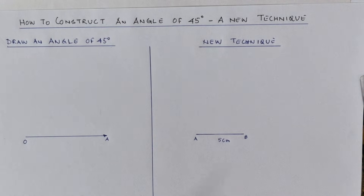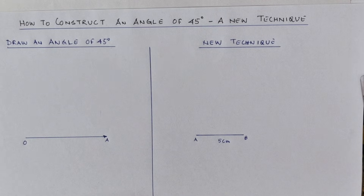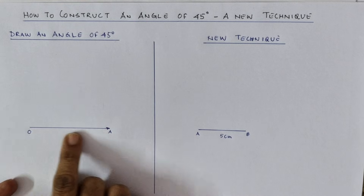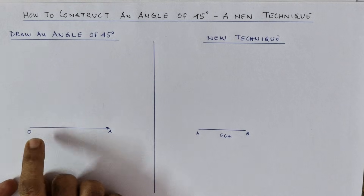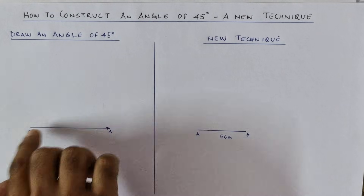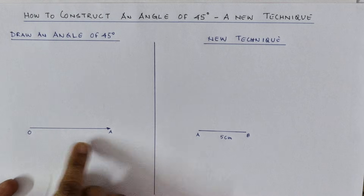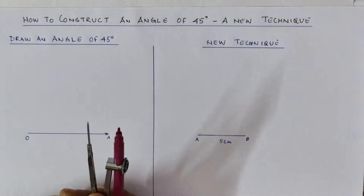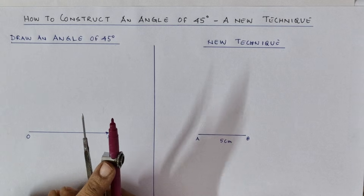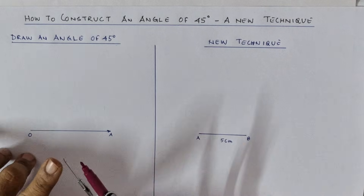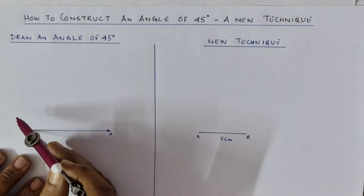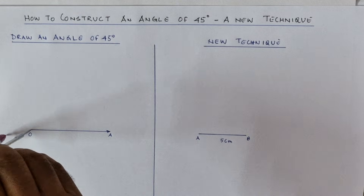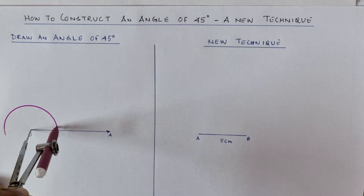Let's start with drawing an angle of 45 degrees in the usual or familiar way. You need a line or ray — I have drawn ray OA with O being the vertex. Choose any radius of your choice, point the needle to the vertex O, and draw a half-circle arc intersecting OA at a certain point.